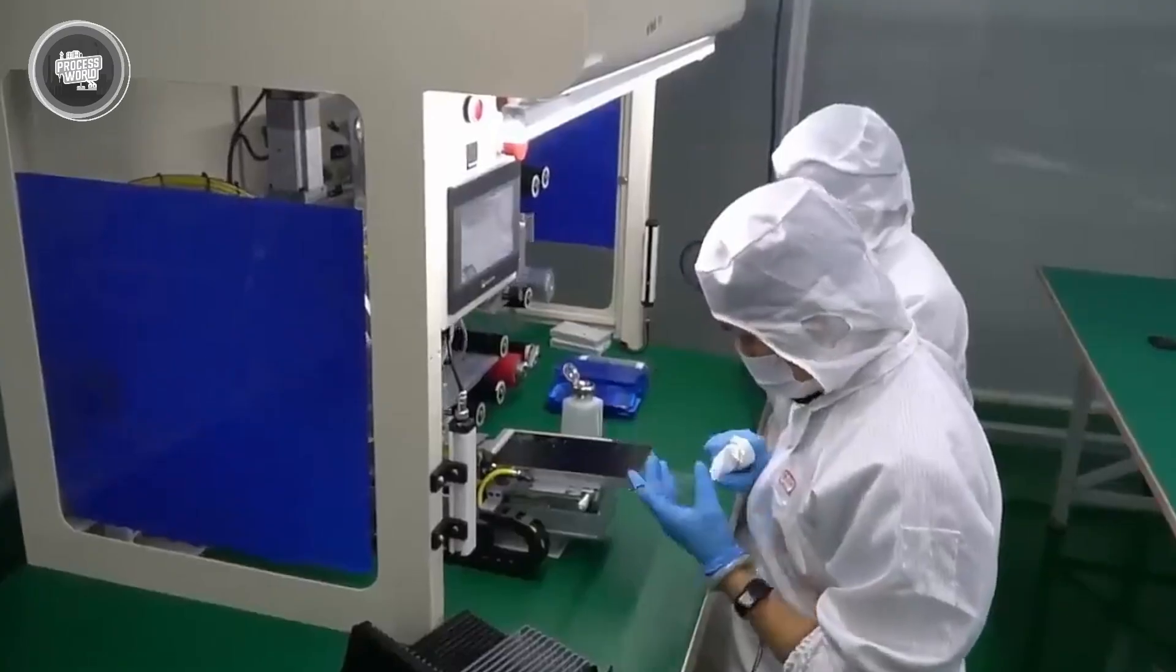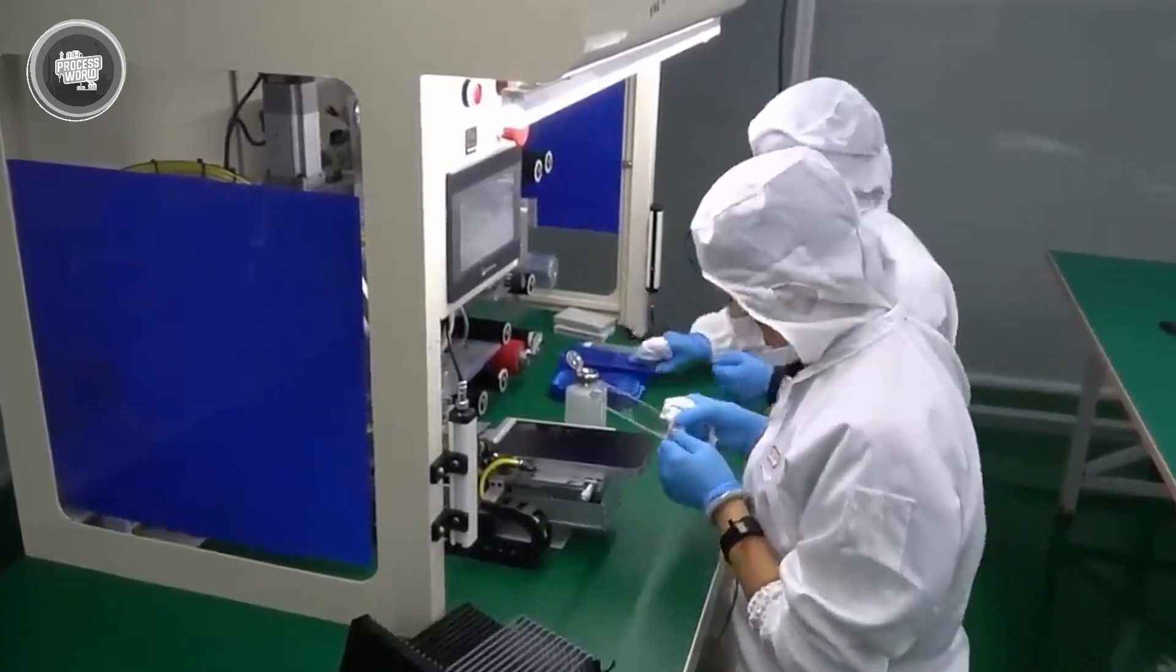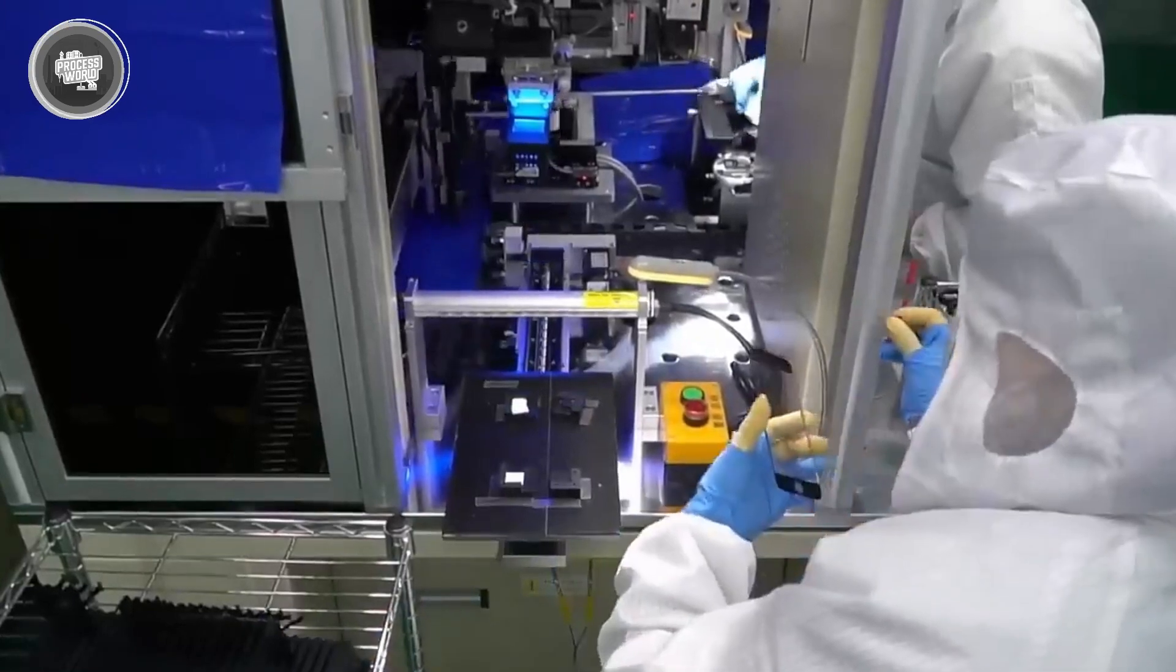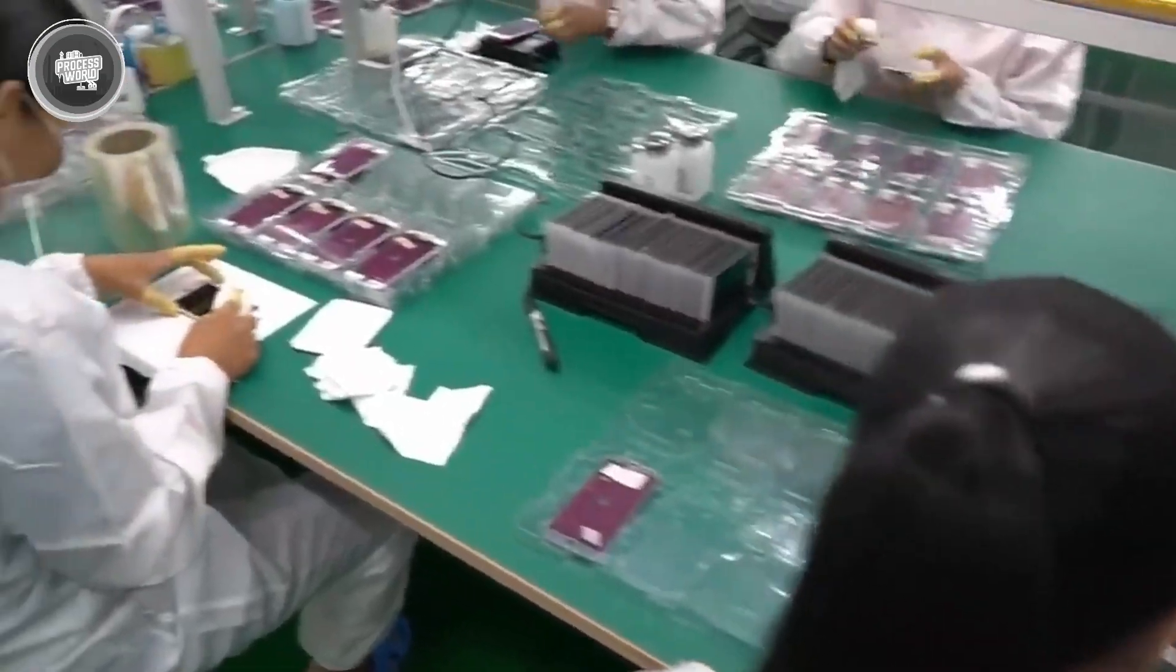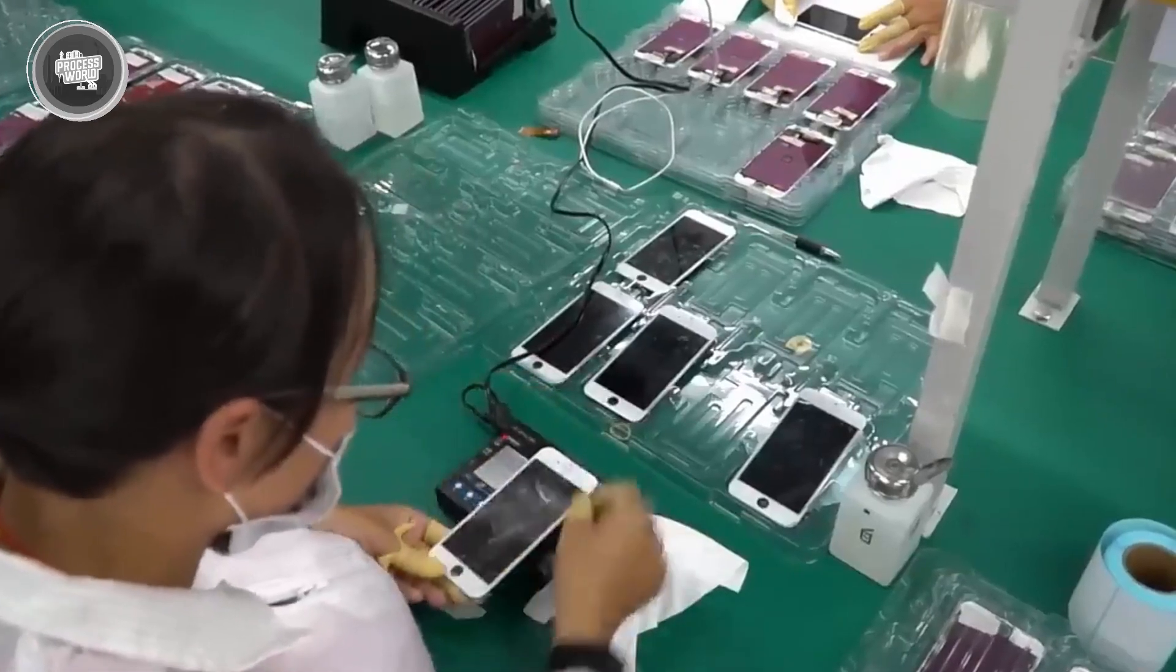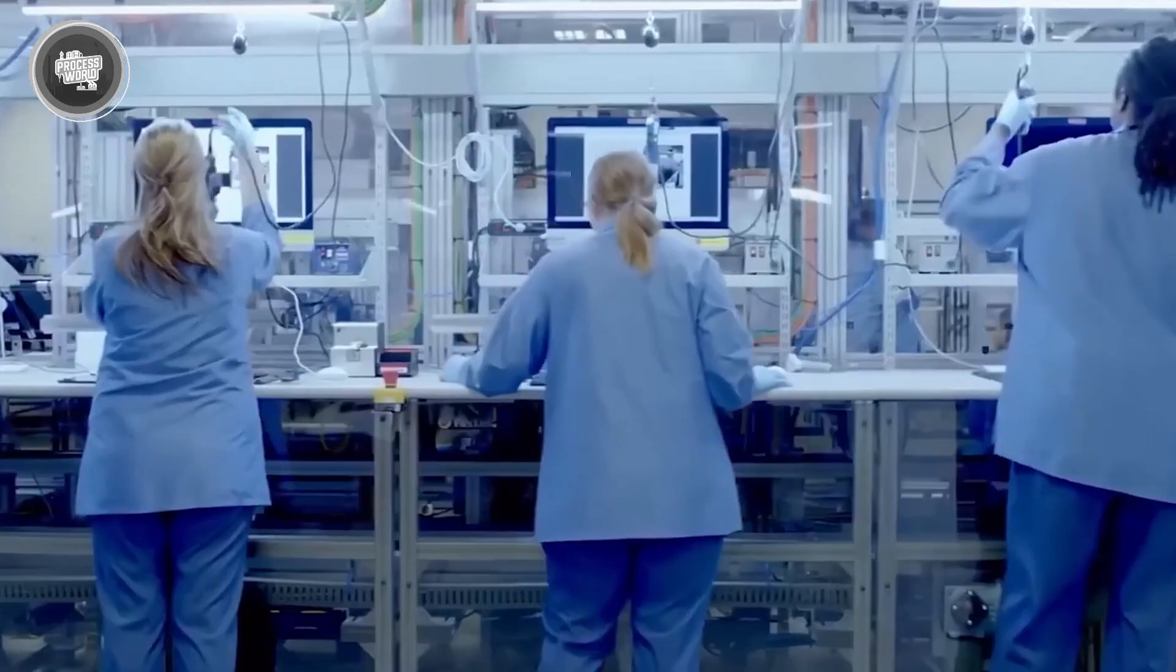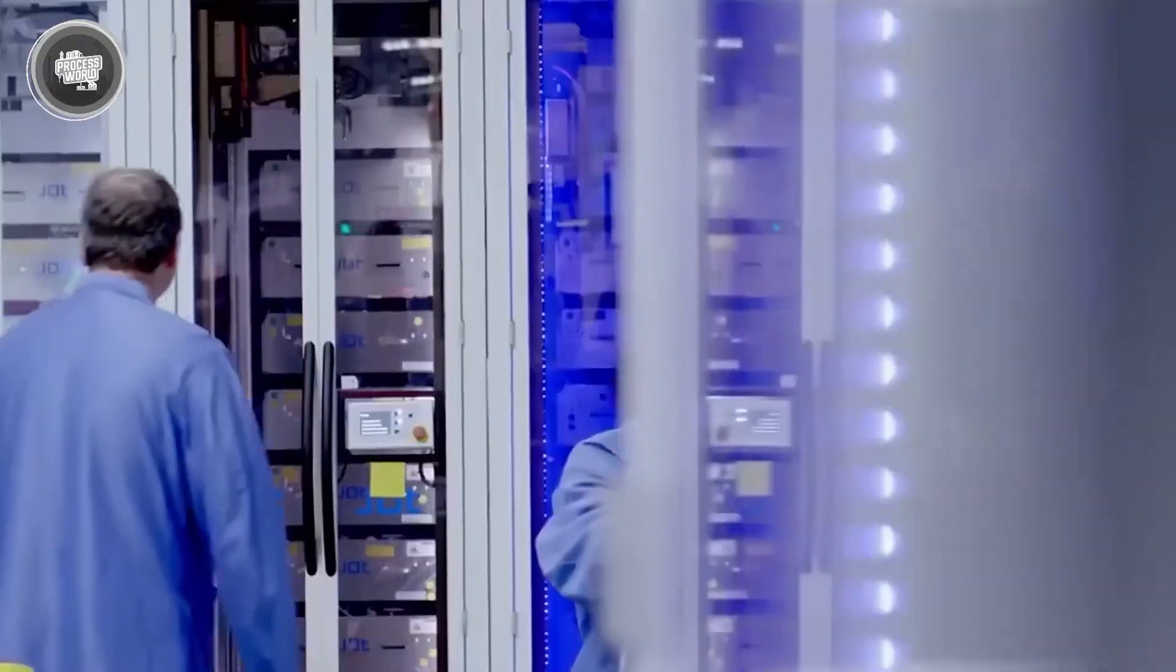Before any part reaches the main assembly line, it goes through incoming quality checks. Technicians inspect the components, test random samples, and confirm that every batch meets Samsung's standards. If something's off, it doesn't move forward. That quality gate is strict and it's one of the reasons Samsung phones maintain consistency across millions of units. Once all the parts are ready and approved, the real work begins.